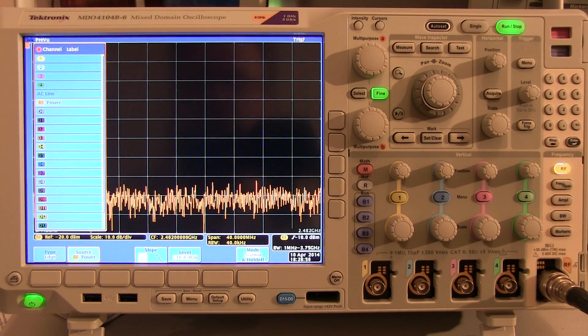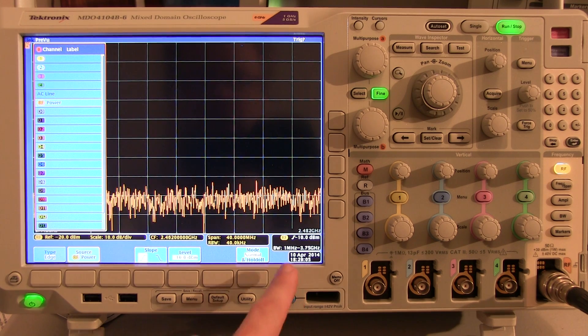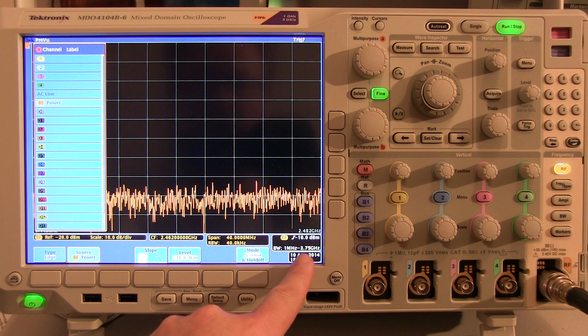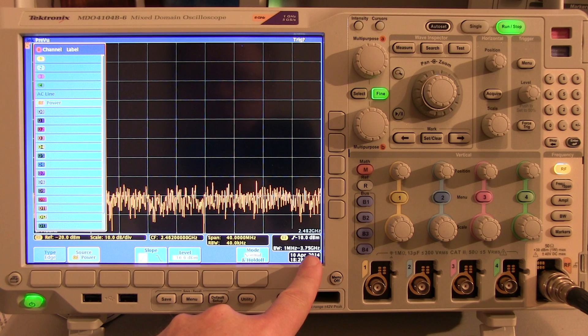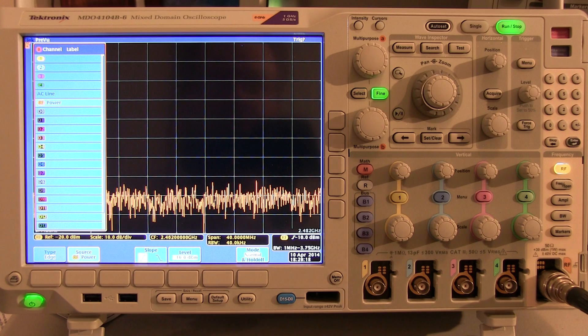Now one word of caution with this is the RF power trigger is a broadband RF power detector operating in whatever frequency band the analyzer happens to be in. And in this setting we can see that the RF trigger bandwidth covers from 1 MHz to 3.75 GHz. So if we want to trigger on a specific RF signal, we have to ensure that's kind of the dominant RF signal that's coming into the analyzer at that point.